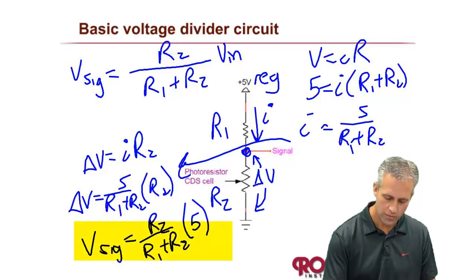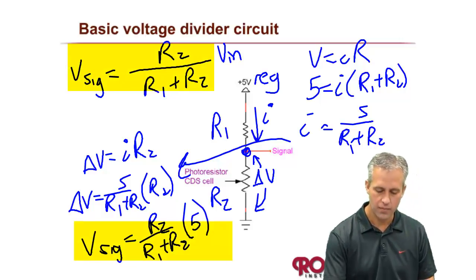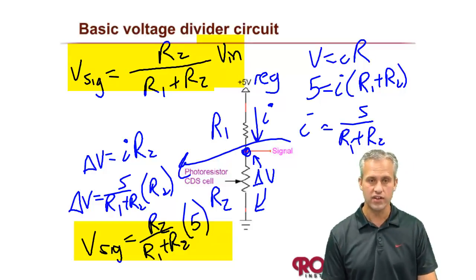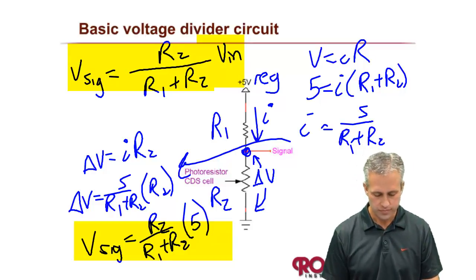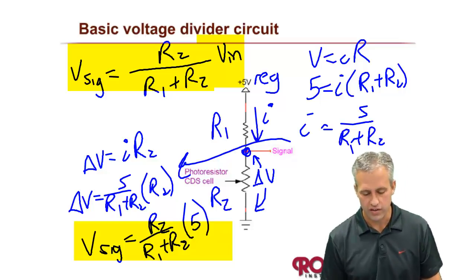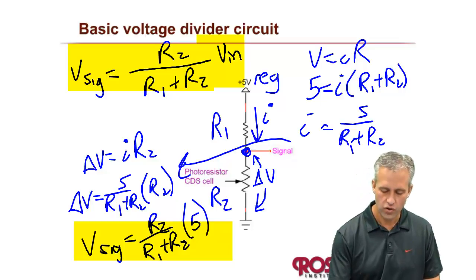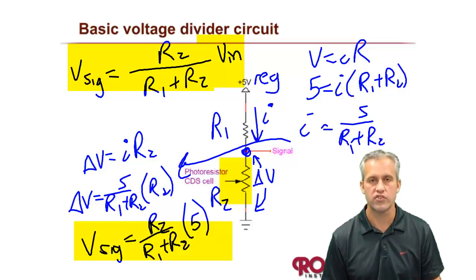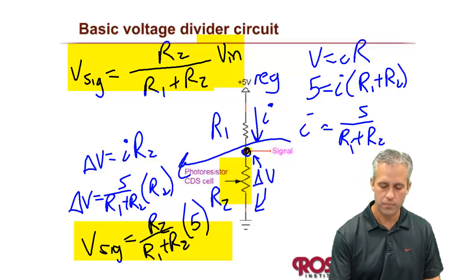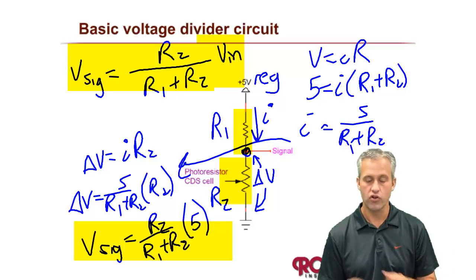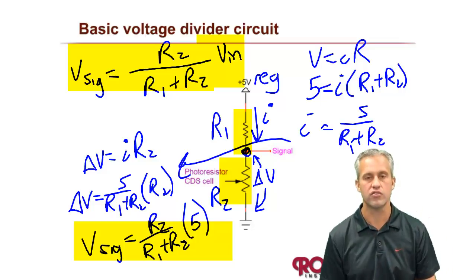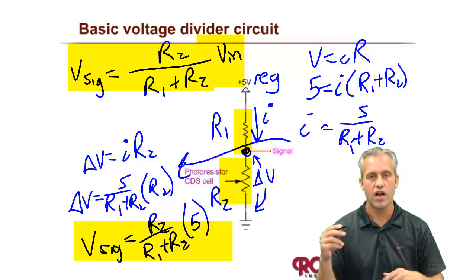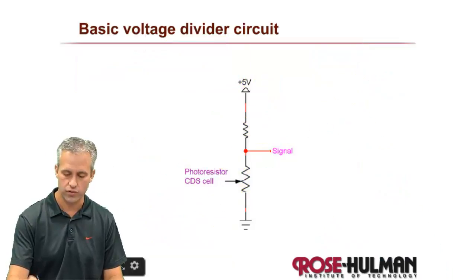So that is the formula that you need anytime you're using a CDS cell. And we derived it even, but that's how it works. So the trick is you've got to kind of know about how big your resistance of your CDS cell is going to be so that you can pick a good value for your R1. Because your R1, you're just going to pick, you're going to put it in the circuit, and then R2, which is the CDS, is going to change. And that's going to tell you how much light there is in the room.